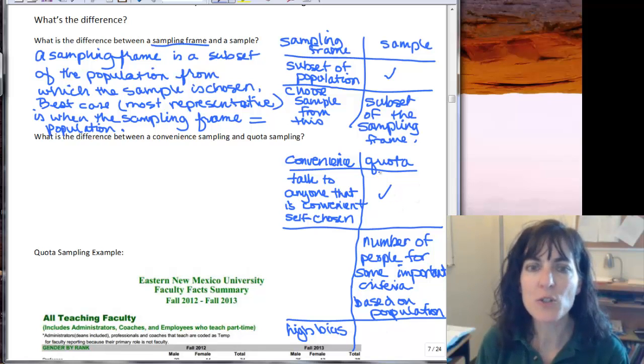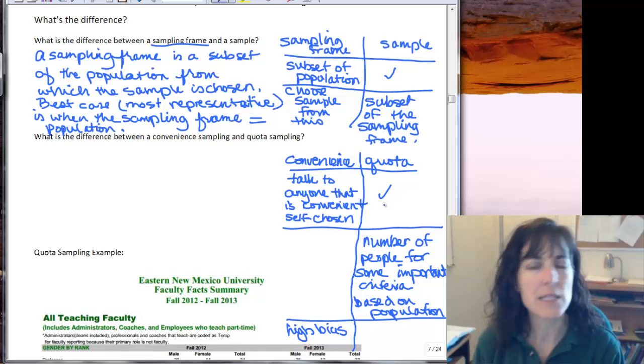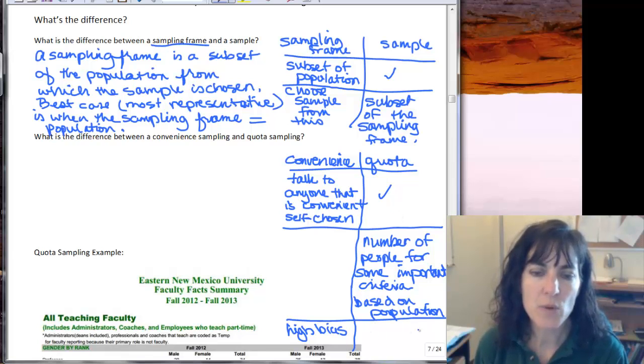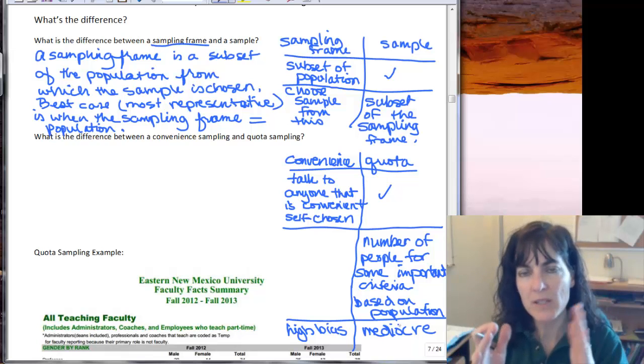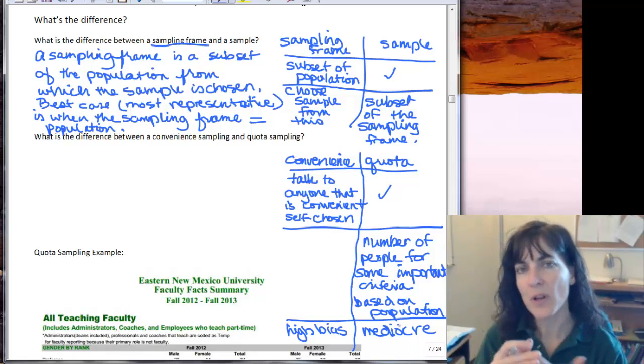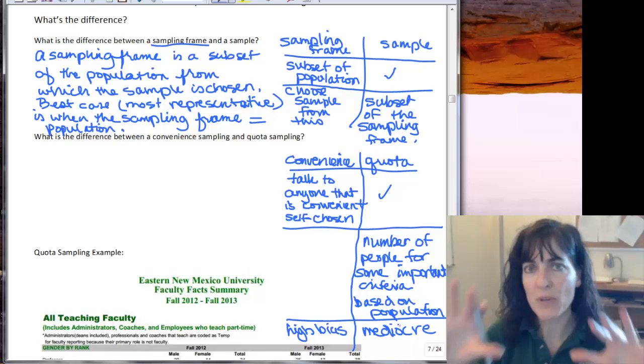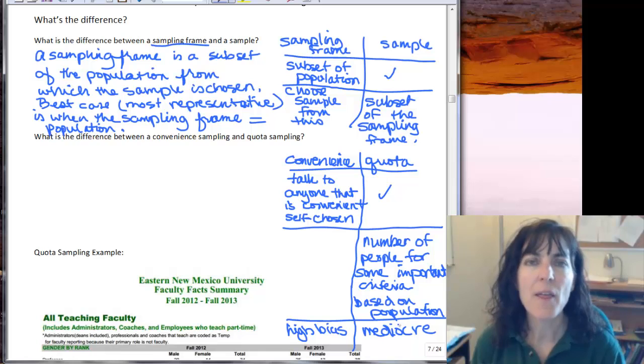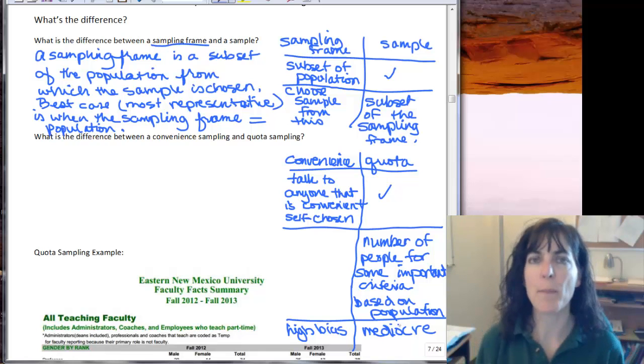So I'm still doing a convenience sample when I do a quota sample, still convenience. I'm still talking to who I think is most convenient and standing where I want to talk to people. The bias on this one is a little bit lower than a convenience sample. So it's mediocre, I like to say, which means not great, but it's not horrible. So if you make quotas and then you go out for your convenient sample, and you have quotas that you're filling, and they represent your population, that's a little bit better than just talking to anybody of any age, for example.